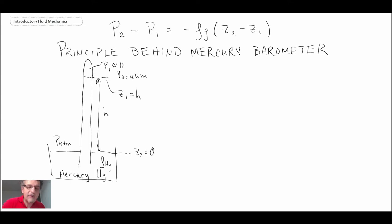So the operation of the mercury thermometer, or barometer, uses this equation here, and the way that it operates is we know Z1 equals H, and at that location, pressure one is equal to zero because we said that there was a vacuum formed at the top of this tube.